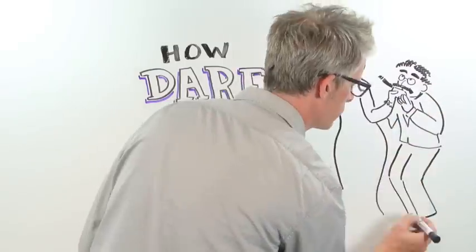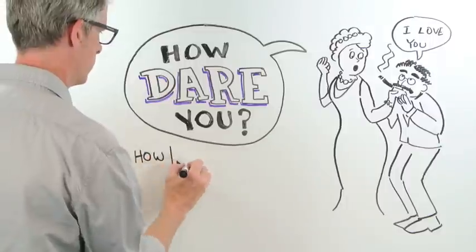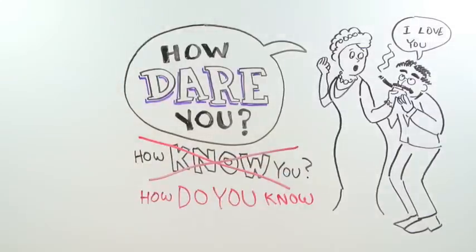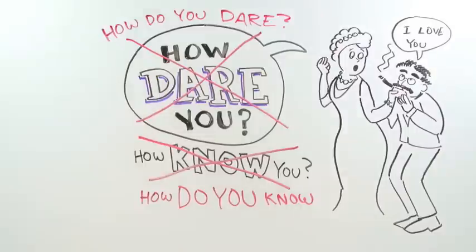Other verbs wouldn't behave the same way in that slot. 'How know you?' No, it's 'how do you know?' Shouldn't it also be 'how do you dare?'